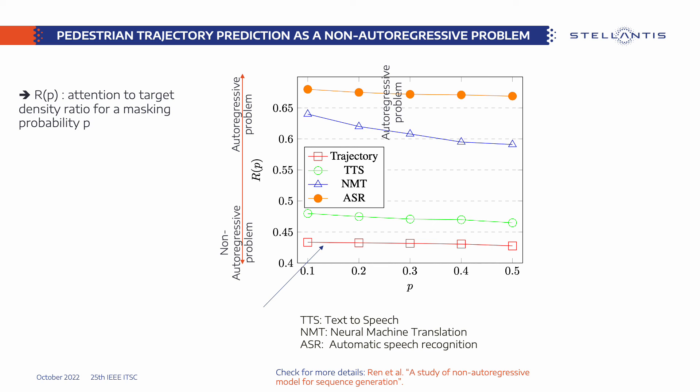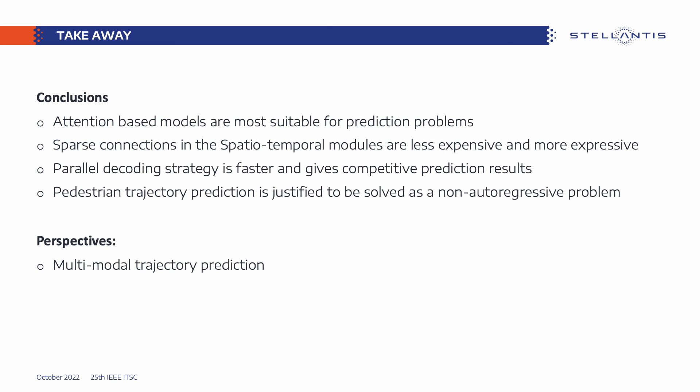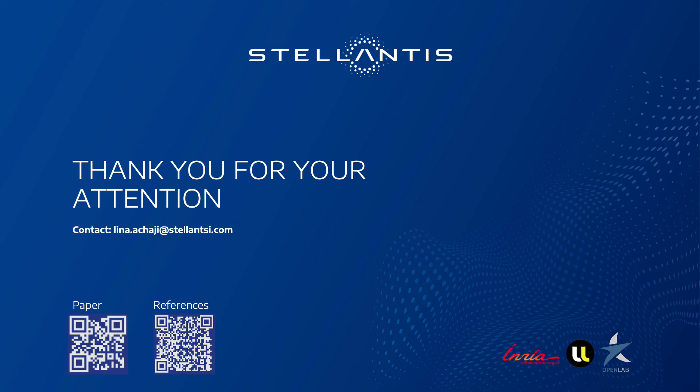In conclusion, using the sparse divided attention module is less expensive and more expressive than the fully connected module. Also, the pedestrian trajectory prediction task can be solved using a non-autoregressive model that decreases inference time without sacrificing prediction accuracy. As a perspective, we plan to extend this model to the multi-modal case, predicting multiple valid trajectories for each agent. Thank you for your attention — please do not hesitate to ask any questions.